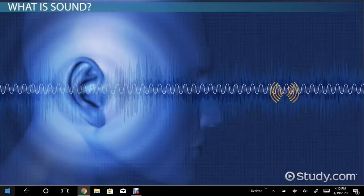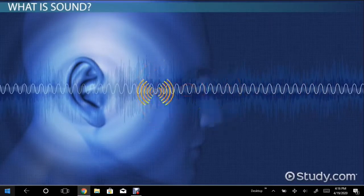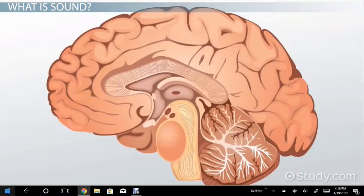When something makes a sound, it vibrates the air molecules, which sends a chain reaction through the air until it reaches our eardrums. When our ears pick up that sound, signals are sent to our brain so that we can interpret what we're hearing.